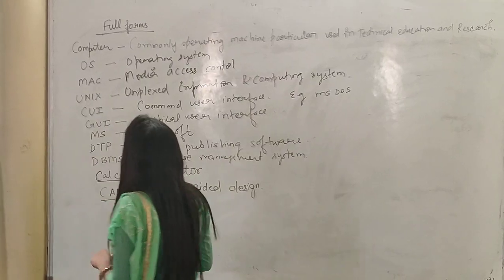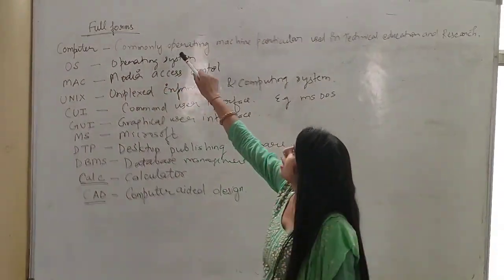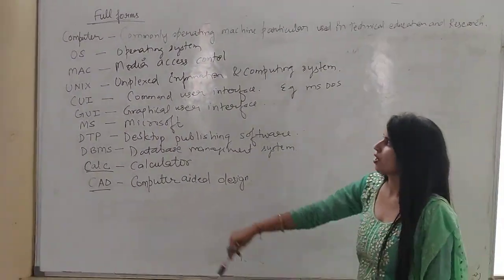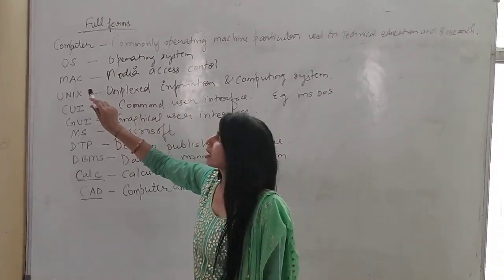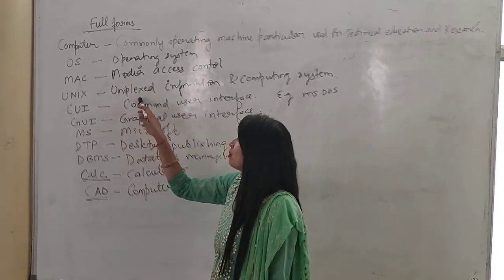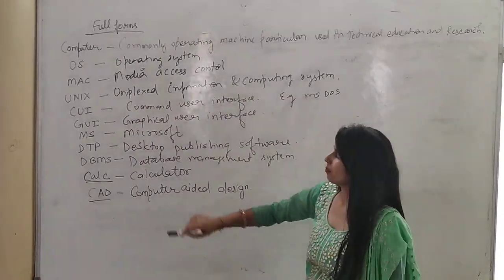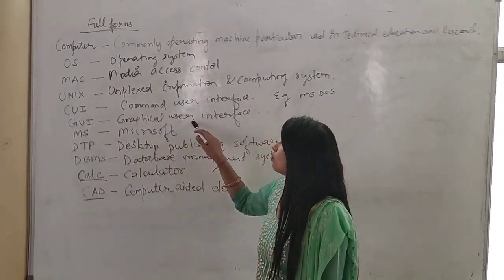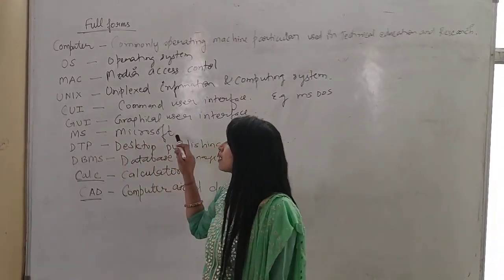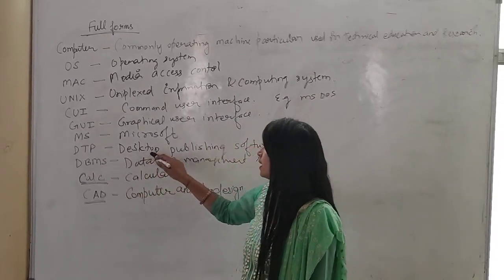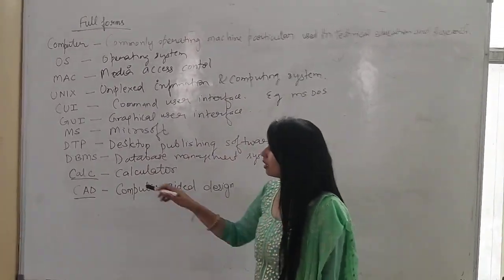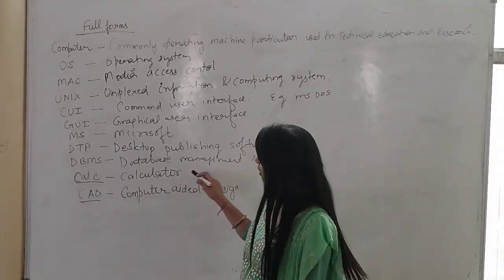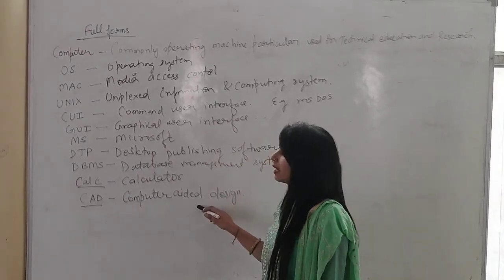Let's revise these all. COMPUTER — Commonly Operating Machine Particularly Used in Technical Education and Research. OS — Operating System. MAC — Media Access Control. UNIX — Uniplexed Information and Computing System. CUI — Command User Interface. GUI — Graphical User Interface. MS — Microsoft. DTP — Desktop Publishing Software. DBMS — Database Management System. CALC — Calculator. CAD — Computer Aided Design.